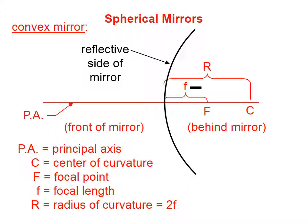When we get into the math of spherical mirrors, it's important to remember that a convex mirror, by convention, has a negative focal length.